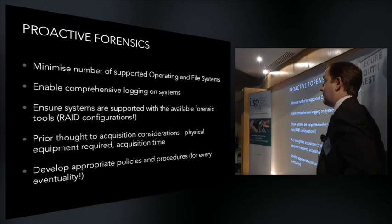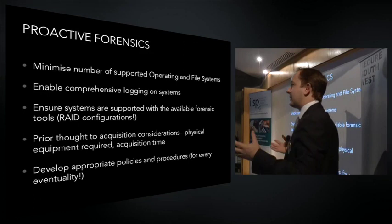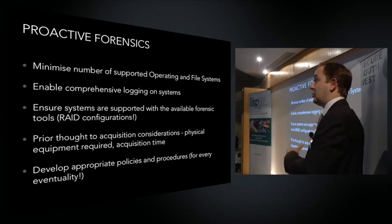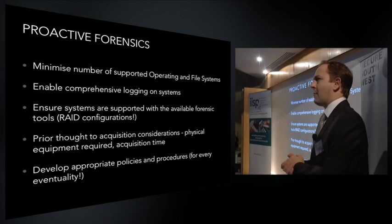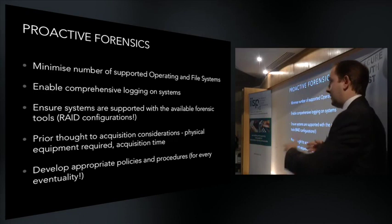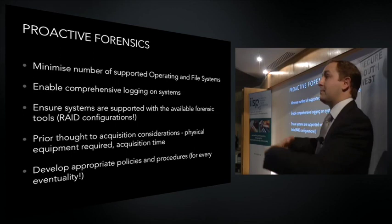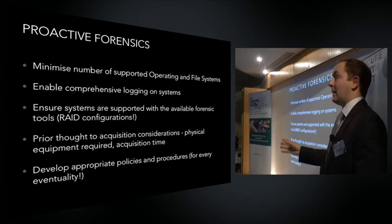We also need to give prior thought to acquisition considerations. Acquisition requires some thought around hard drive types, different connector types, and the forensics machine you're going to acquire data on. For example, an 8-terabyte NAS would require you to have 8 terabytes — or in fact 3 to 4 terabytes for a compressed image — of network storage to place the forensic image on in order to do the analysis. And like any incident planning, you need to make sure all appropriate policies and procedures are in place beforehand so that when an incident does happen, you've got an effective team and process in place to manage it.